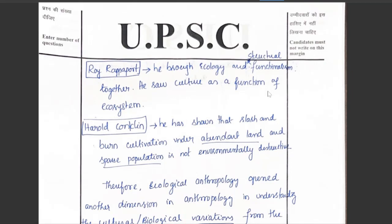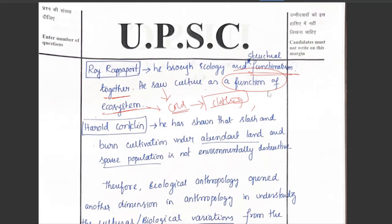Similarly, Roy Rappaport brought ecology and structural functionalism together. He saw culture as a function of the ecosystem. For example, in cold regions, the lifestyle, culture, and clothing are all adapted to those cold locations. Similarly, in terms of human evolution, for a forest ecosystem there is one kind of adaptation, and for a terrestrial ecosystem there is another.